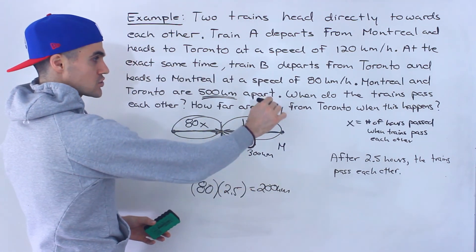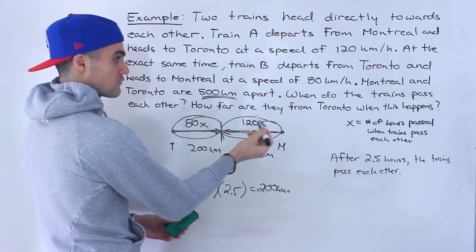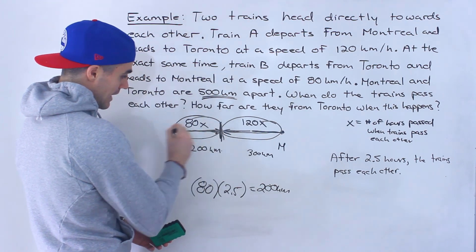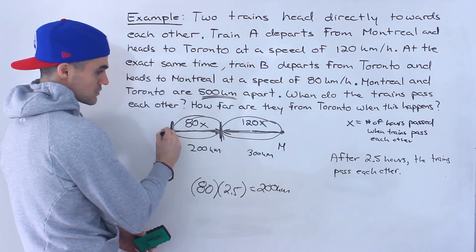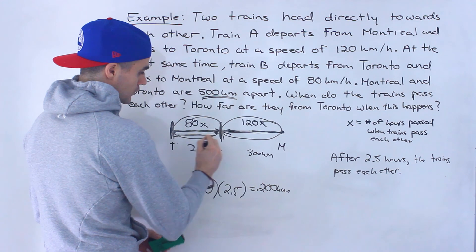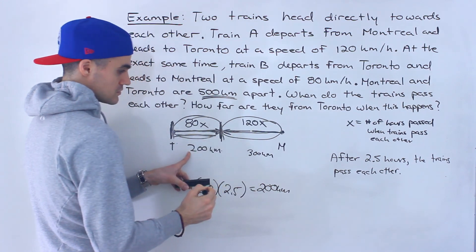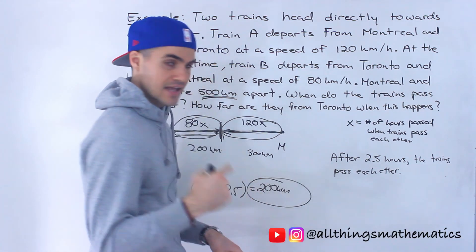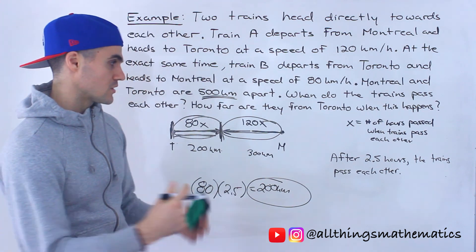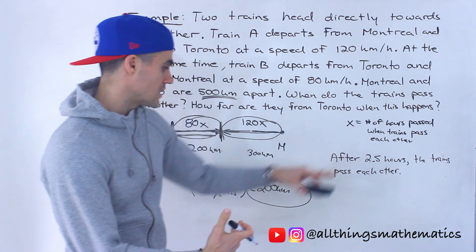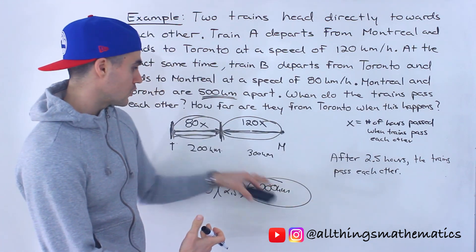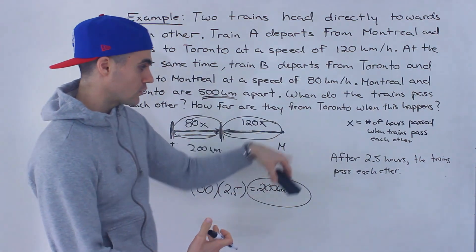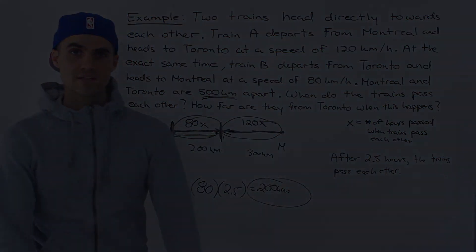The second question was: how far are they from Toronto when they pass each other? Toronto is over here. Train B, which departed from Toronto, traveled 200 kilometers — so they're 200 kilometers from Toronto. They pass each other after two and a half hours, 200 kilometers away from Toronto and 300 kilometers away from Montreal.